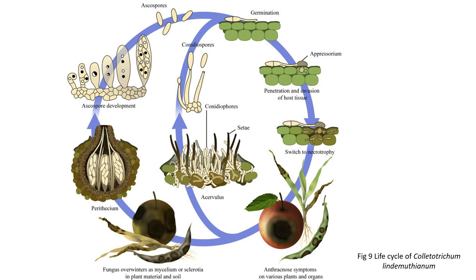The asexual form, also known as the anamorph stage, is depicted by a small circle. During this stage, the pathogen produces acervuli that erupt through the epidermis — the acervulus is basically a fruiting body. The conidia spores are then dispersed by water splashes, resulting in secondary spread of the disease. The conidia spores land on healthy plant tissue, followed by germination, penetration, and invasion. The pathogen initially takes nutrients in biotrophic form, then secretes enzymes and toxins that kill plant cells, switching to the necrotrophic stage of feeding.